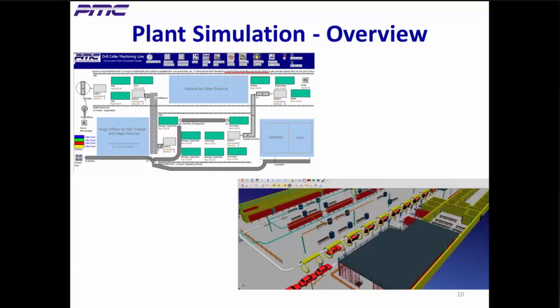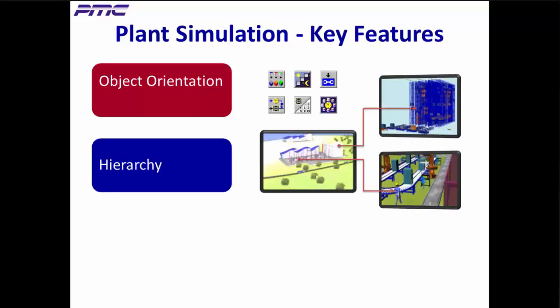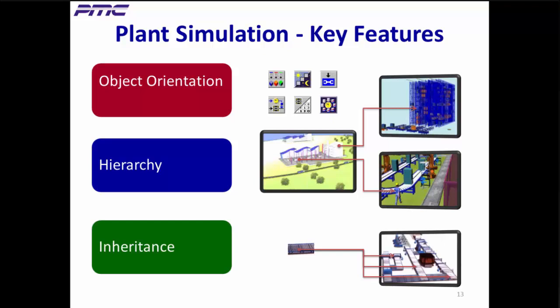I'd like to point out three of its unique key features. Object orientation provides intuitive use of powerful, built-in, and custom-made objects that let you build models quicker. Hierarchy lets you structure complex models in an intuitive manner and makes it easier to make changes without tediously rearranging things as other flat-structured products require. Inheritance lets you make changes in one place and all children are changed accordingly, ensuring quality and saving you a lot of time.